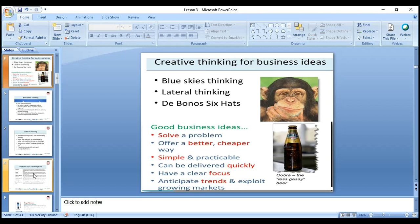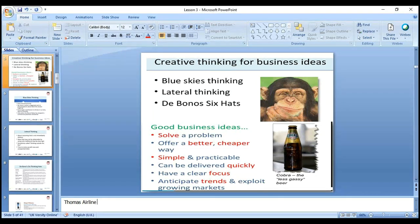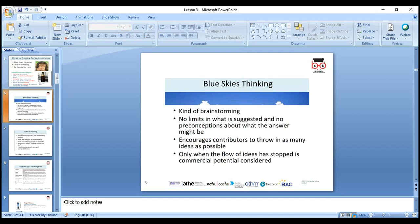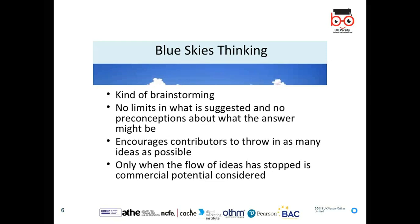Can the idea be delivered quickly? You need to anticipate trends and exploit a growing market. Think about Thomas Cook — they collapsed because they didn't follow the trend, didn't implement new ideas, and didn't get rid of loss-making units. In business, some units cause losses, and you need to identify that and act. Anticipating and following the trend is essential.